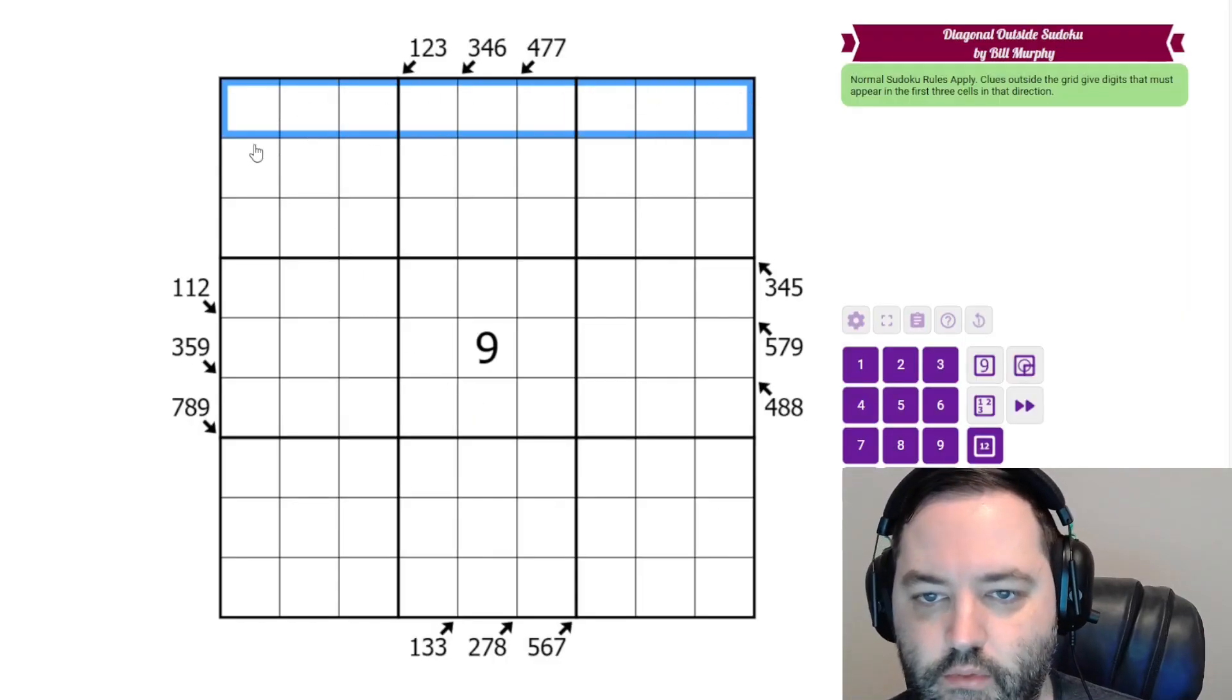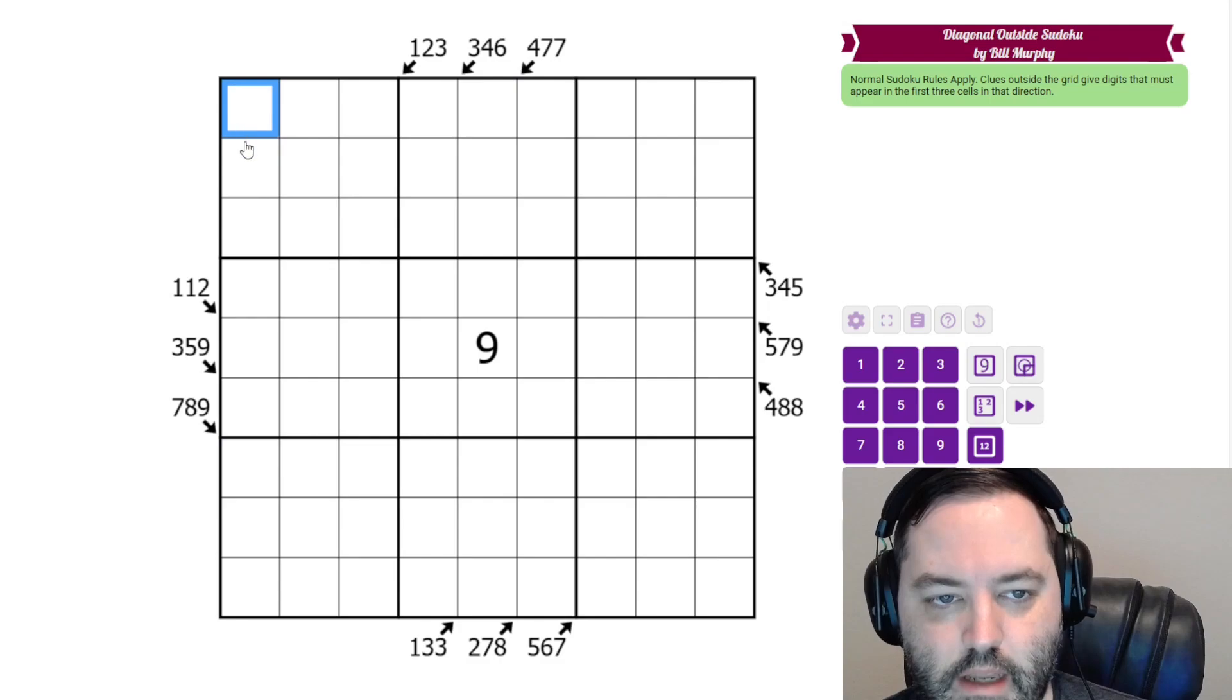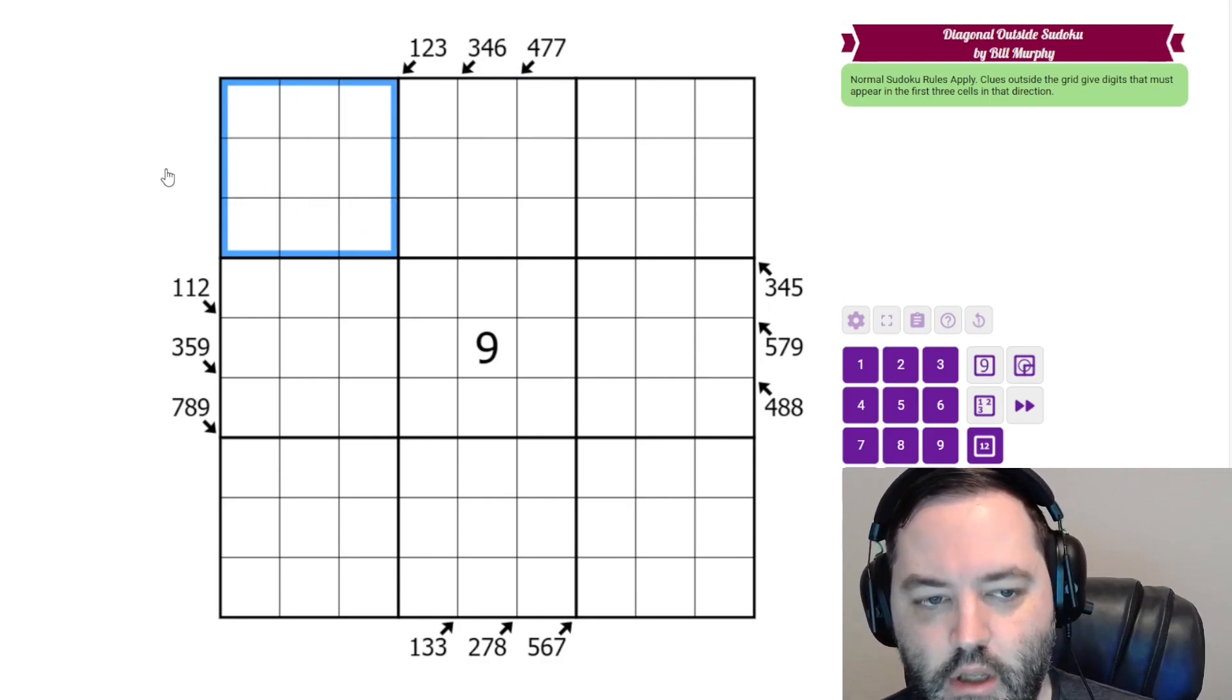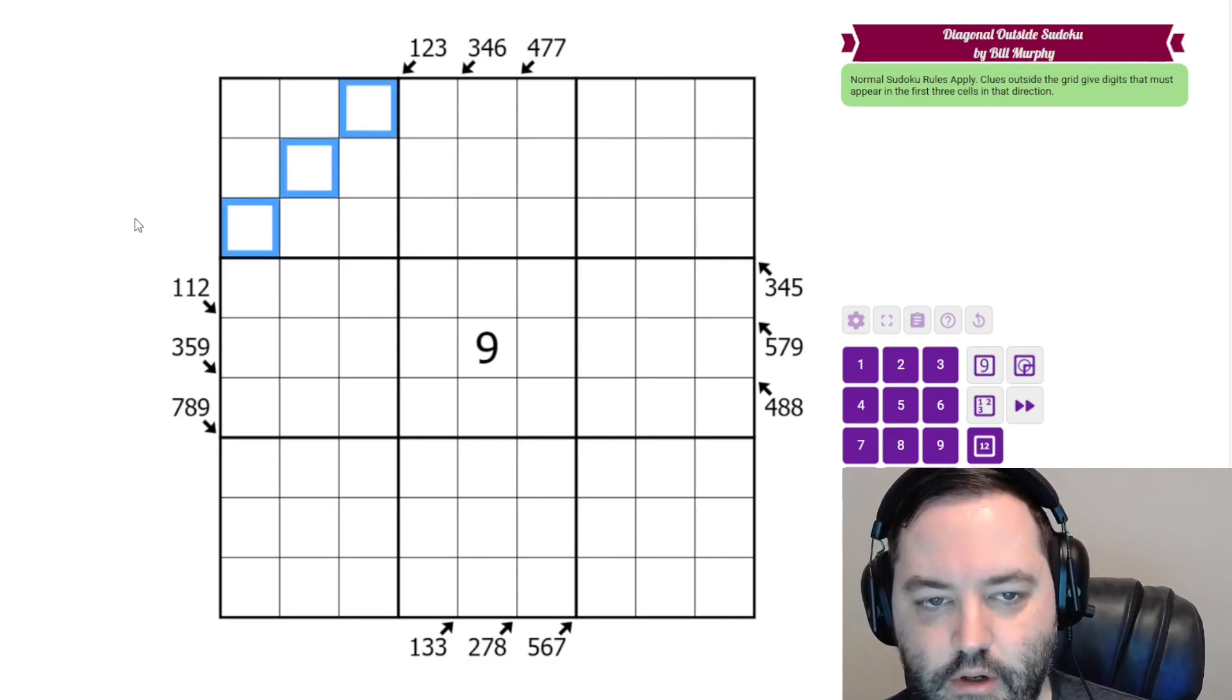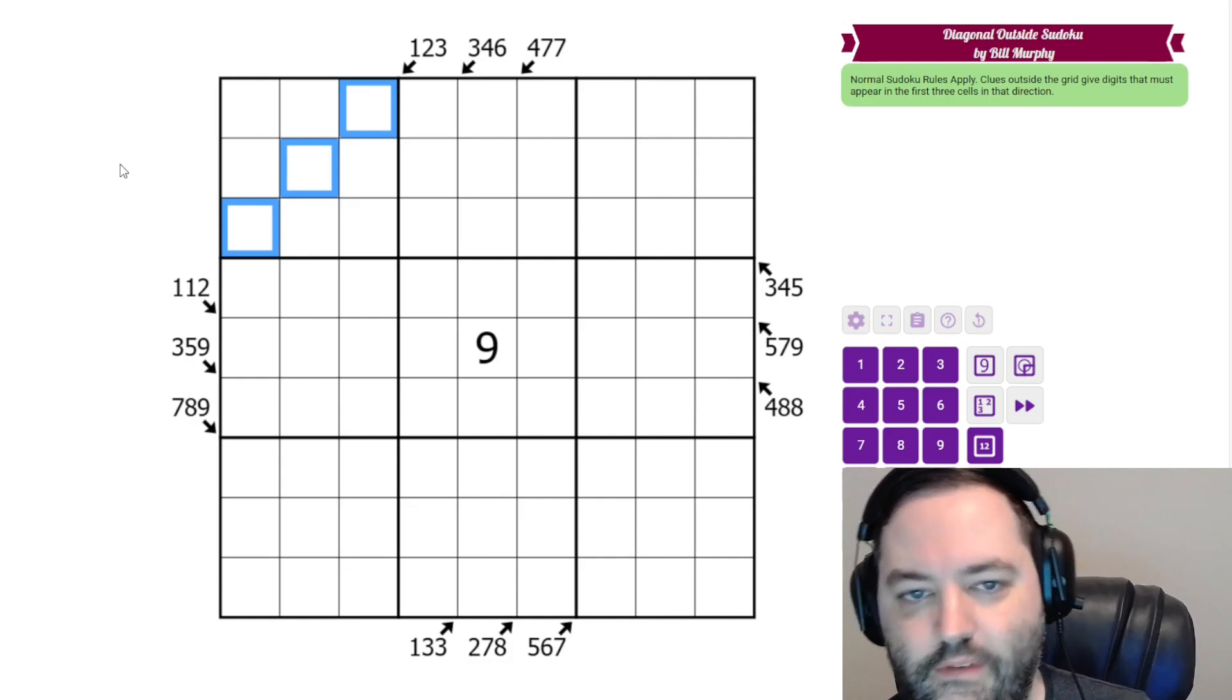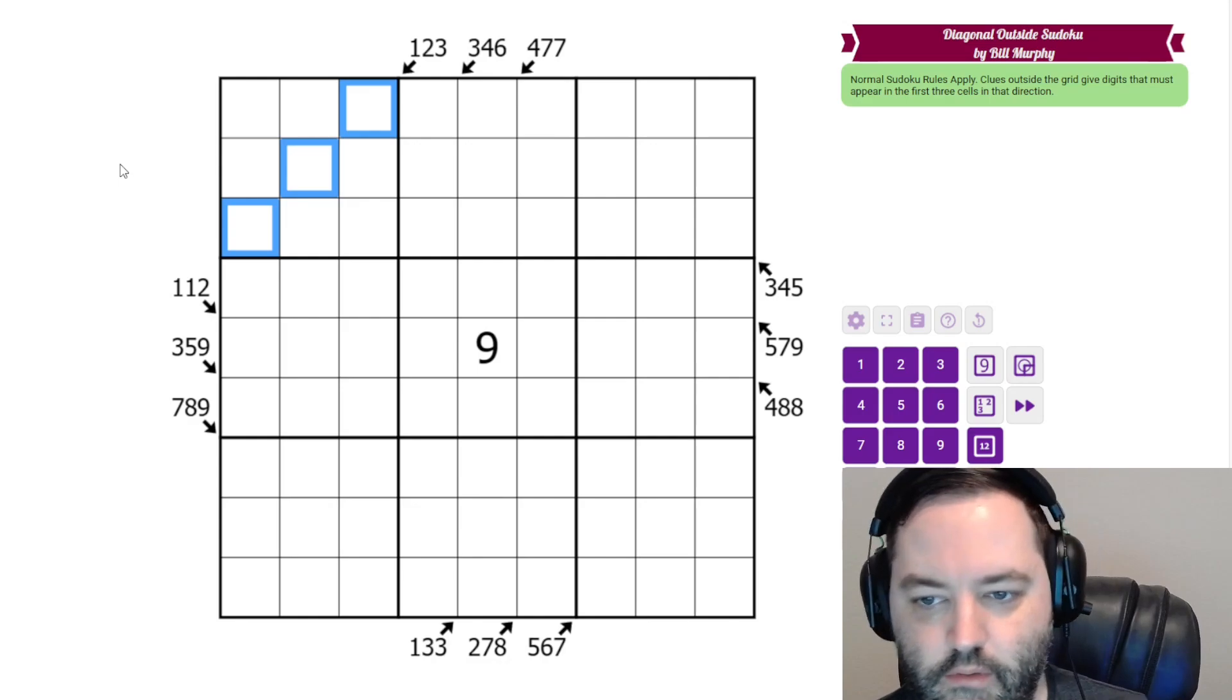We have normal Sudoku rules: 1 to 9 in each row, column, and 3 by 3 box. Additionally, we have some clues outside the grid, and those clues give the digits that must appear in the first three cells. The clues that Bill has given all have three digits, so it's telling us exactly which digits must appear in those three cells.